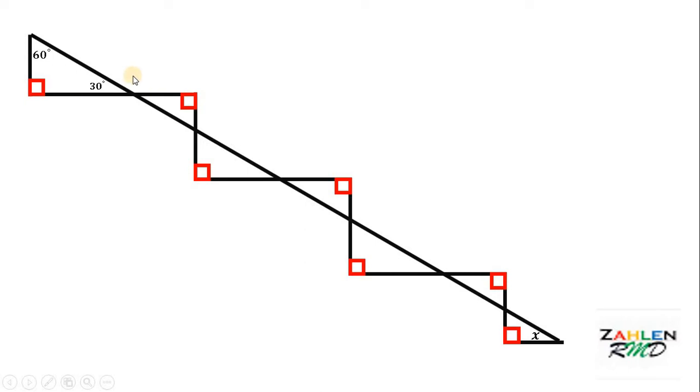Now at this point, since we know that this angle is 30 degrees, we know for sure that this angle is also 30 degrees because they are vertical angles. And it keeps going. We can find the measure of this angle, vertical angles, this angle, vertical angles. And eventually, when you reach this triangle, we know for sure you can find the value of x.